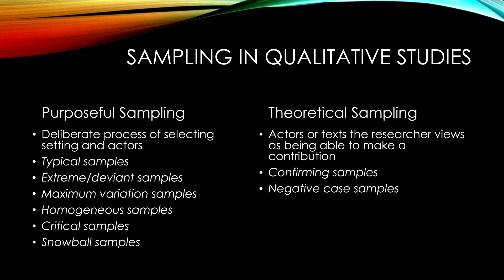There are also critical samples — where one or two key people must be included — and snowball sampling, where the researcher starts with a small group and asks participants who else should be interviewed. Theoretical sampling is where actors or texts are chosen to either confirm or challenge emerging conclusions — a negative case sample would select information contrary to the current beliefs to put doubt on a conclusion. Purposeful sampling is seen by far the most frequently, with the goal of getting enough people sampled to provide a range of potential responses.